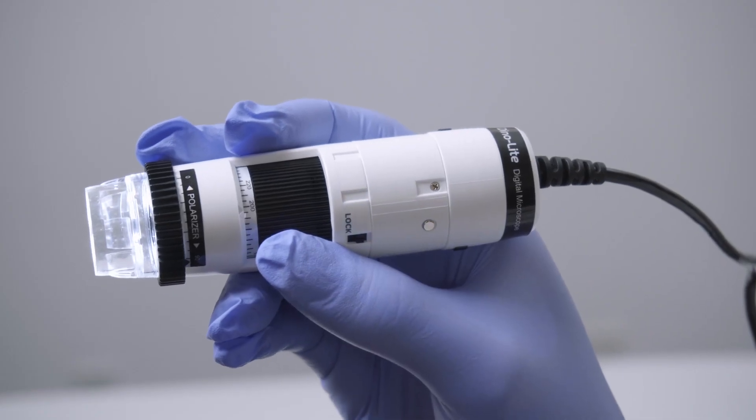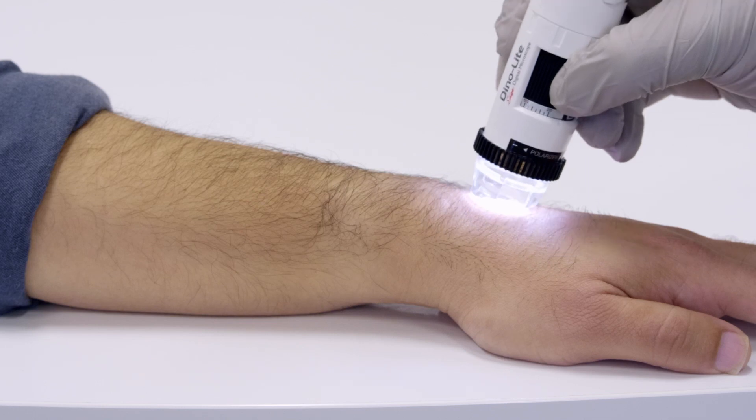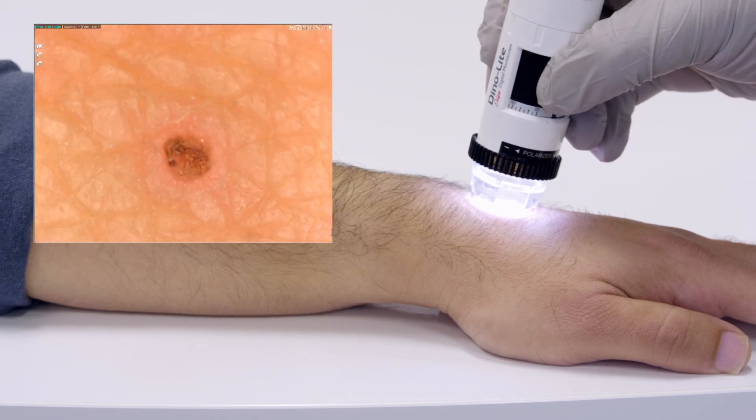Face the Dynolite logo upwards for proper image orientation. Gently place the device onto the skin and adjust the focus by rotating the dial.